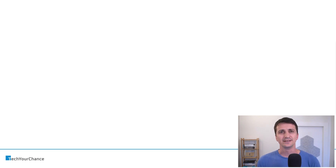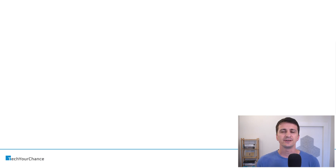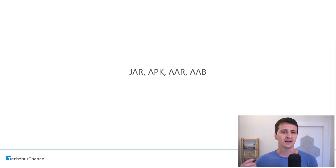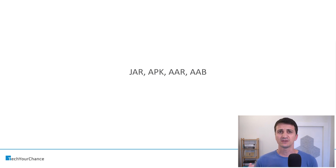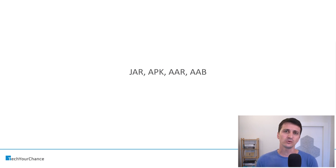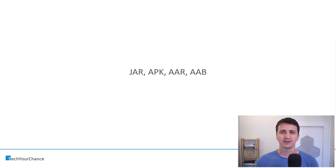Hello ladies and gentlemen. In this video we're going to discuss several packaging formats that are very widespread in the Android ecosystem — namely JARs, APKs, AARs and AAB formats. Let's understand what's the difference between all of these, why do we use them, and let's take a quick look into these files to understand what kind of contents we can expect to find there.